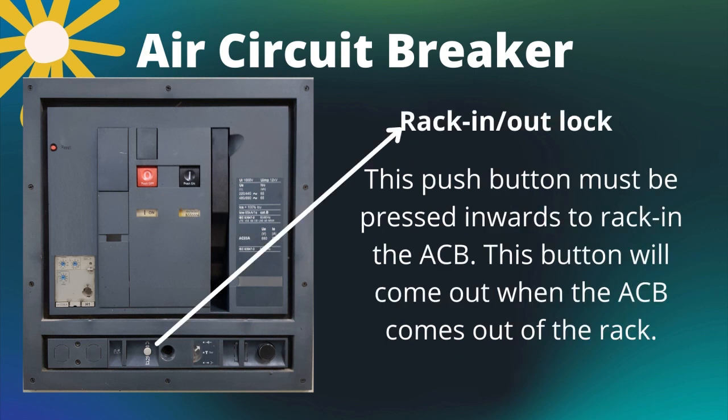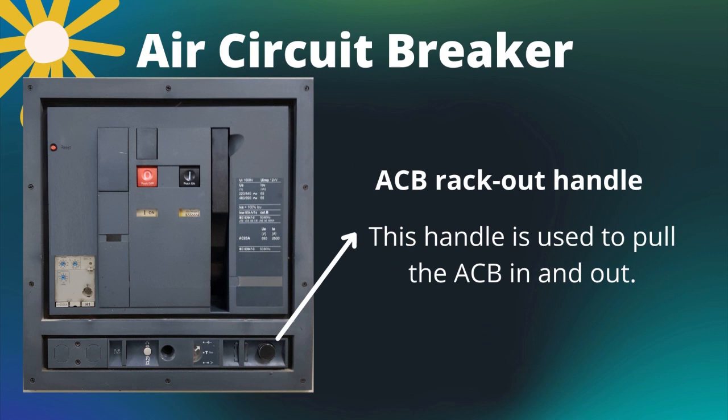The rack in/rack out lock: this push button must be pressed inwards to rack in the ACB, and it comes out when the ACB is pulled out of the rack. The ACB rack out handle is used to pull the ACB in and out, and is available only on the withdrawable type ACB.